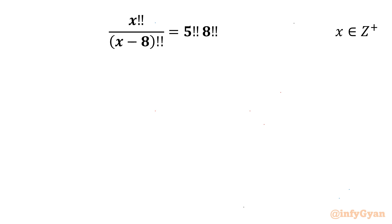Welcome back to Infigyan, my dear friends. In today's video we are going to take up an exciting and challenging factorial equation problem: x double factorial over x minus 8 double factorial equal to 5 double factorial times 8 double factorial, where x belongs to positive integers. So let's get it started.